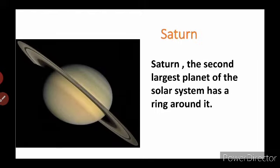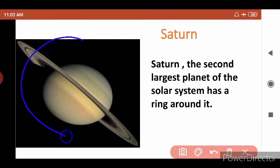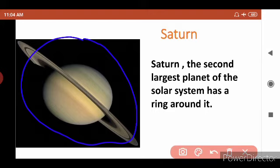Saturn is the second largest planet of the solar system and has a ring around it. Here you can see the picture of Saturn planet, and here is the ring — can you see the ring on the image? Saturn looks like a ball with a ring around it. It is very easy to understand because if you see Saturn you will find a ring around it.